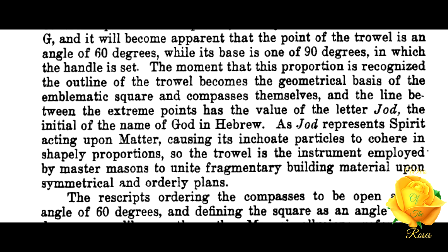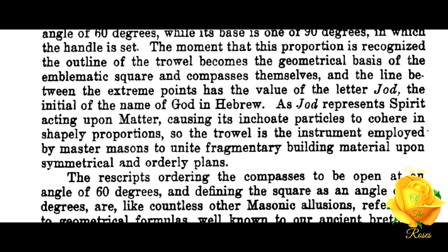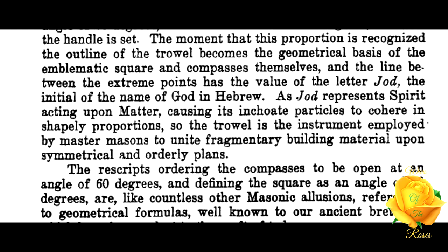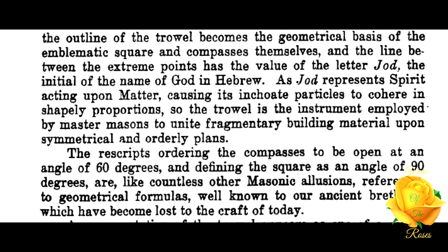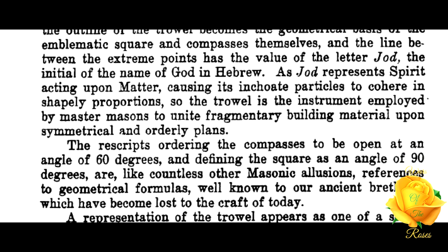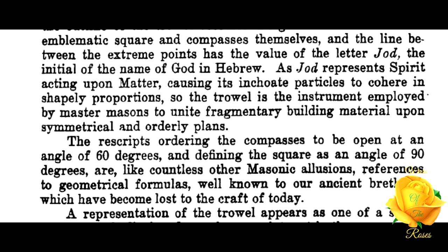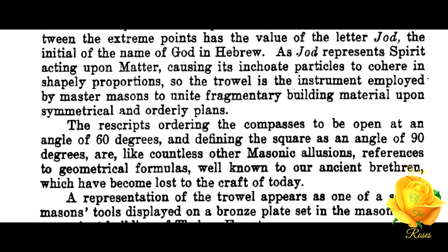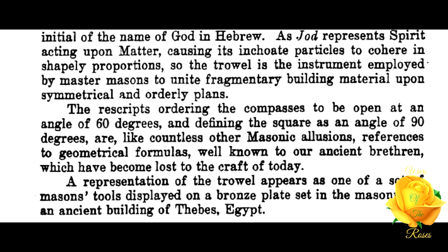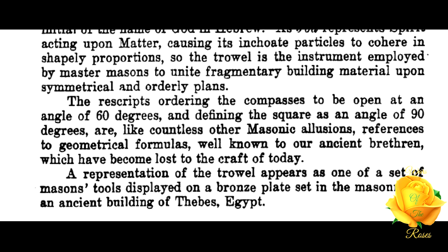The moment that this proportion is recognized, the outline of the trowel becomes the geometrical basis of the emblematic square and compass themselves, and the line between the extreme points has the value of the letter Jod — the initial of the name of God in Hebrew. As Jod represents spirit acting upon matter, causing its inchoate particles to cohere in shapely proportions, so the trowel is the instrument employed by master masons to unite fragmentary building material upon symmetrical and orderly plans.